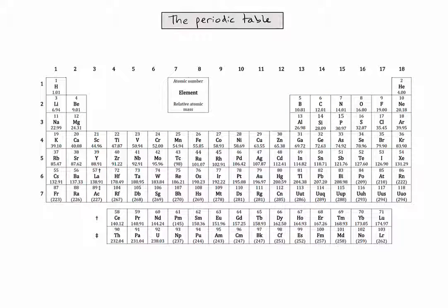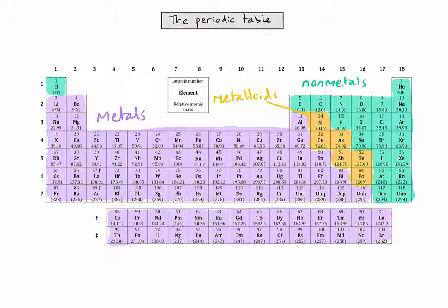We can also divide the periodic table into metals, non-metals, and metalloids. There are also a few specific names for groups or blocks on the periodic table that we need to be aware of.